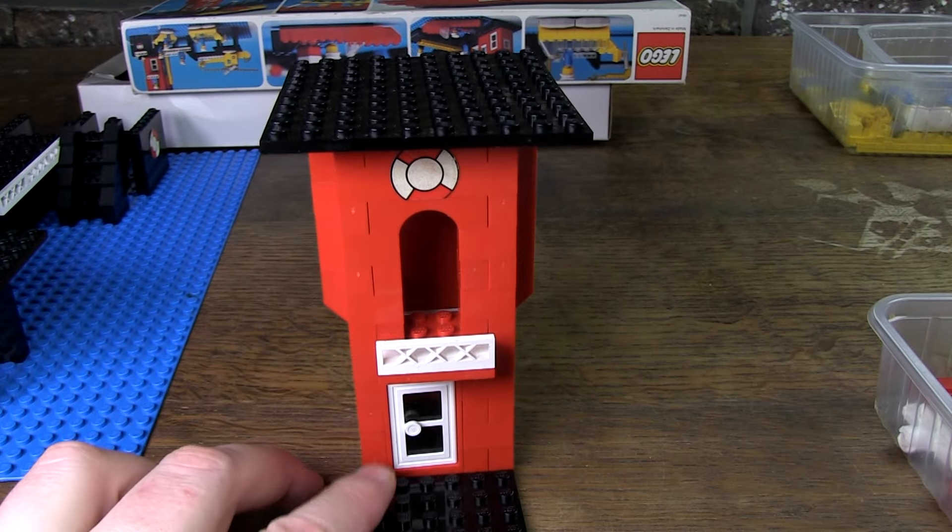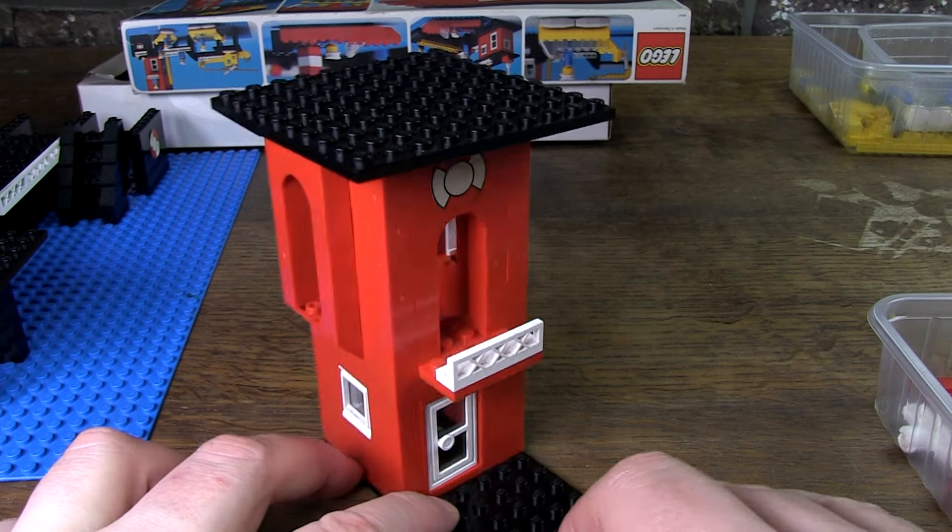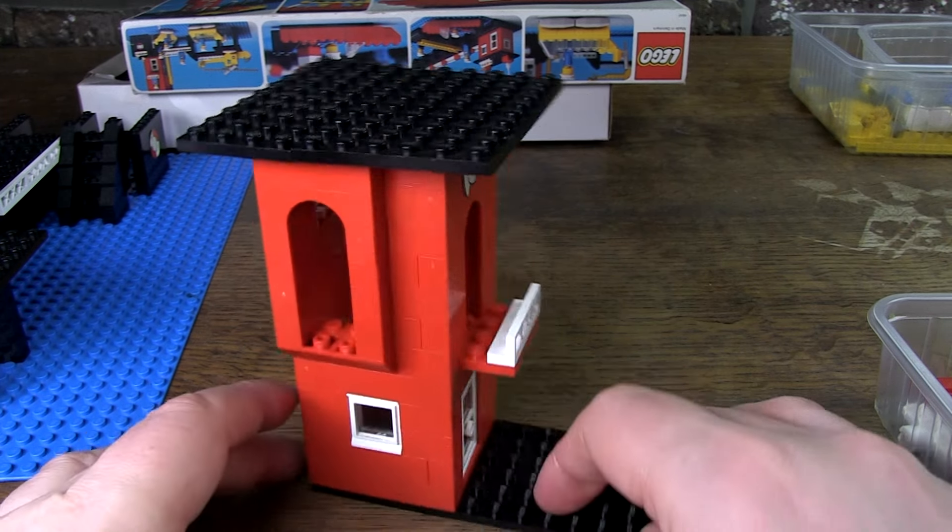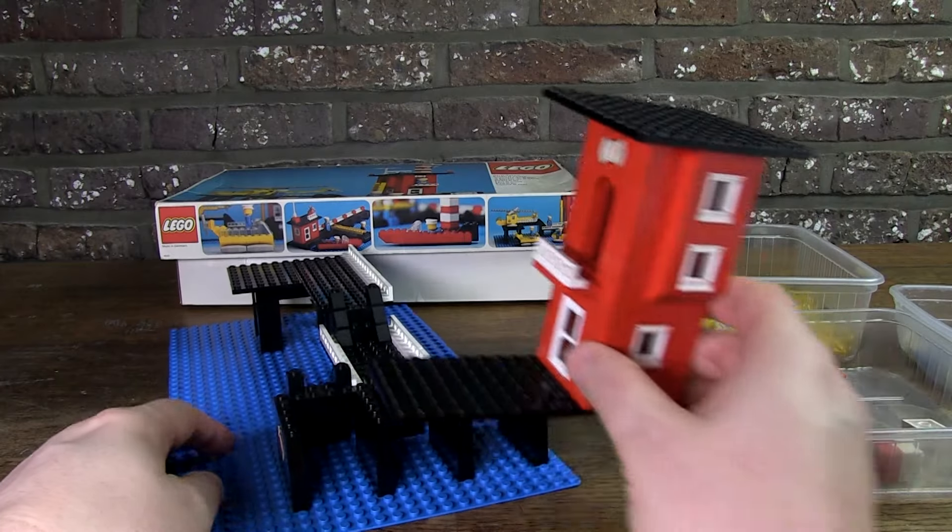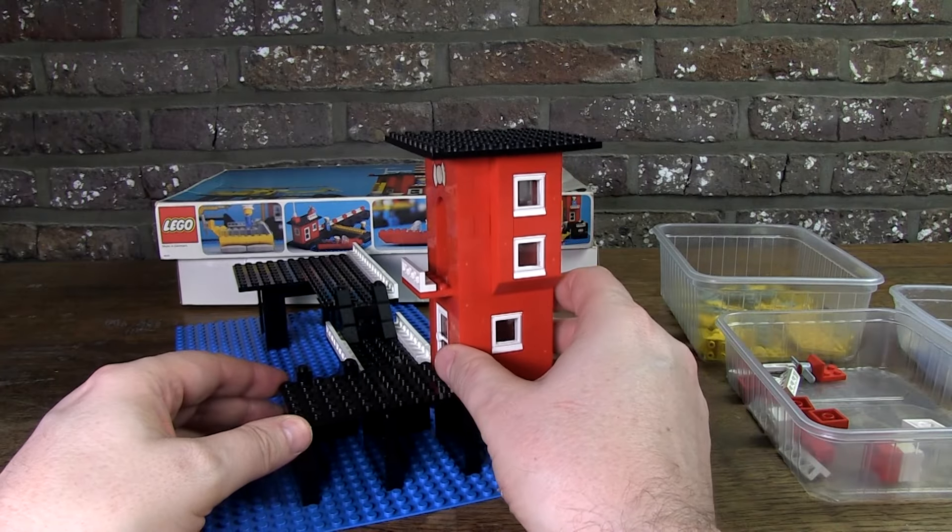At the bottom, there is a door. And on the first floor, there is an opening with a balcony. And one where you can place a ladder. And of course, you can also put minifigs in it. And that improves the playability a lot.